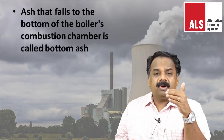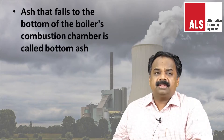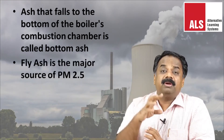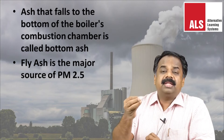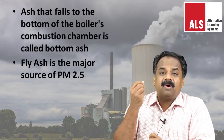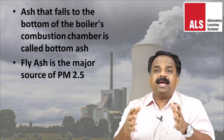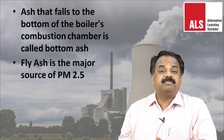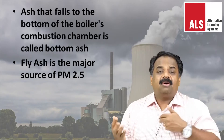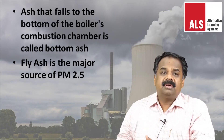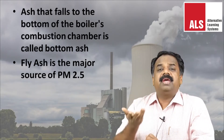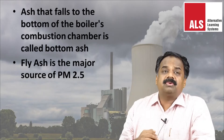Fly ash is a major source of PM 2.5 — particulate matter smaller than 2.5 micrometers, much smaller than the thickness of human hair. These very fine, respirable pollution particles become airborne, especially in summer, and can be transported to a 20 to 30 kilometer radius around power plants. They can settle on water and other surfaces, can be inhaled, and are carcinogenic.